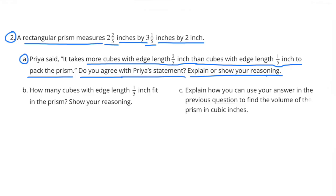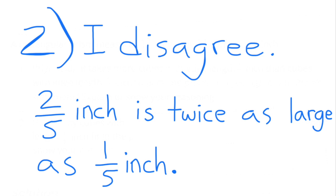Number two: a rectangular prism measures two and two-fifths inches by three and one-fifth inches by two inches. Priya said it takes more cubes with edge length two-fifths inch than cubes with edge length one-fifth inch to pack the prism. I disagree — two-fifths inch is twice as large as one-fifth inch, so fewer larger cubes would fit.